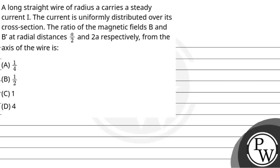Hello, let's read out the question. The question says: a long straight wire of radius A carries a steady current I. The current is uniformly distributed over its cross-section. The ratio of magnetic field B and B' at radial distances A/2 and 2A respectively from the axis of the wire is?